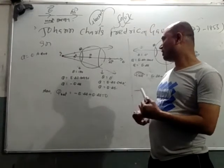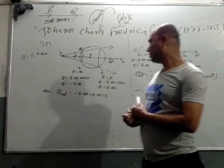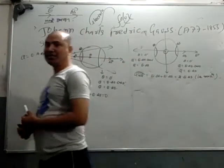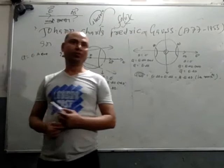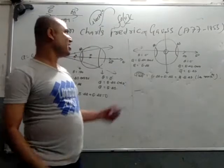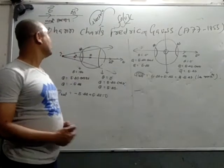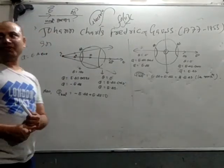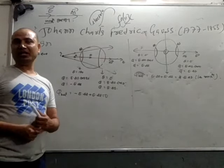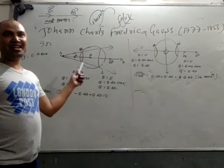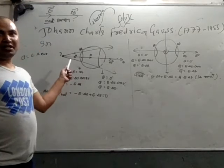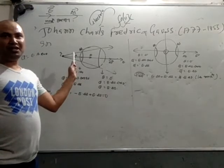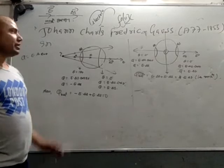Now I am talking about the Gaussian concept. The genius mathematician Johann Carl Friedrich Gauss was the first mathematician who realized about the flux related with the field and the surface area.